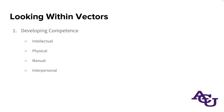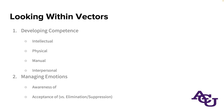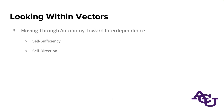Let's look at some expansion of these vectors. For vector one, developing competence, we're specifically looking at intellectual competence, physical and manual competence — like working with your hands, hand-eye coordination — and interpersonal competence. Vector two, managing emotions: are you aware of what's going on? How are you feeling, how are you accepting this, or are you trying to ignore or suppress that? Vector three, moving through autonomy toward interdependence, involves self-sufficiency and self-direction as different ways of understanding what you're learning about how to be autonomous — and recognizing that you can be too self-sufficient to the point of causing problems.